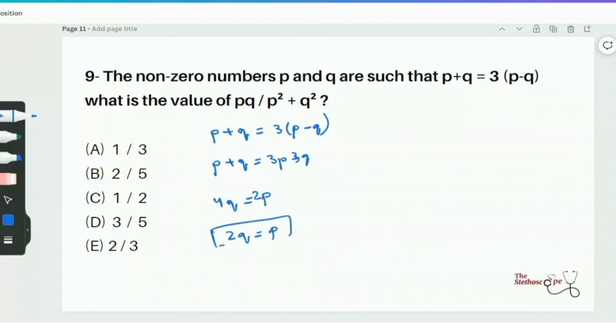Now we can substitute the expression p equals 2q into the equation. So every time p appears in the equation, we can simply replace this with 2q. And that's going to enable us to solve our question. So our numerator is going to be 2q times q over 2q square plus q square, which gives 2q square over 5q square. And of course, this is going to be simplified to 2 over 5. So the answer option B is the correct answer for this question.